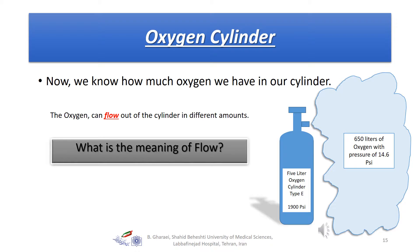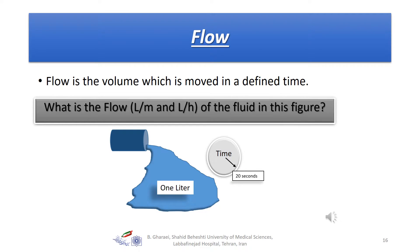Till now, we have learned that an oxygen cylinder contains condensed, pressurized oxygen — a large volume stored in a small container. Now, the next topic we are going to discuss is flow. What is the meaning of flow? Flow is the volume of fluid moved in a defined unit of time. In the figure, find out what is the flow of the fluid using two different units.